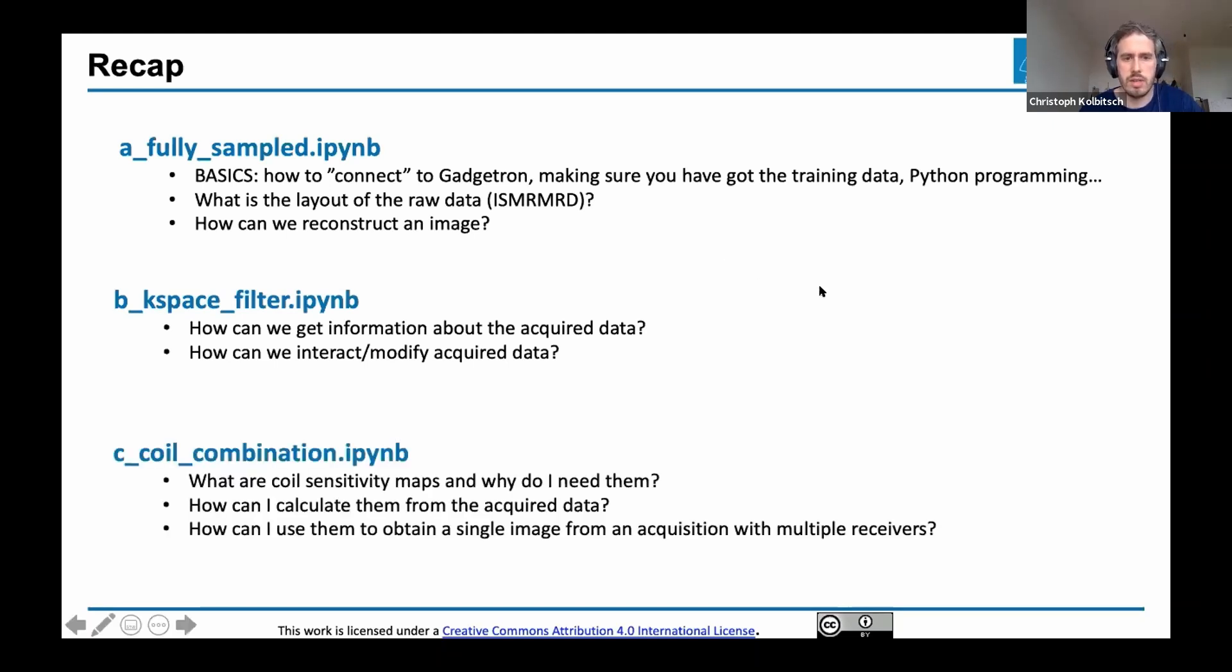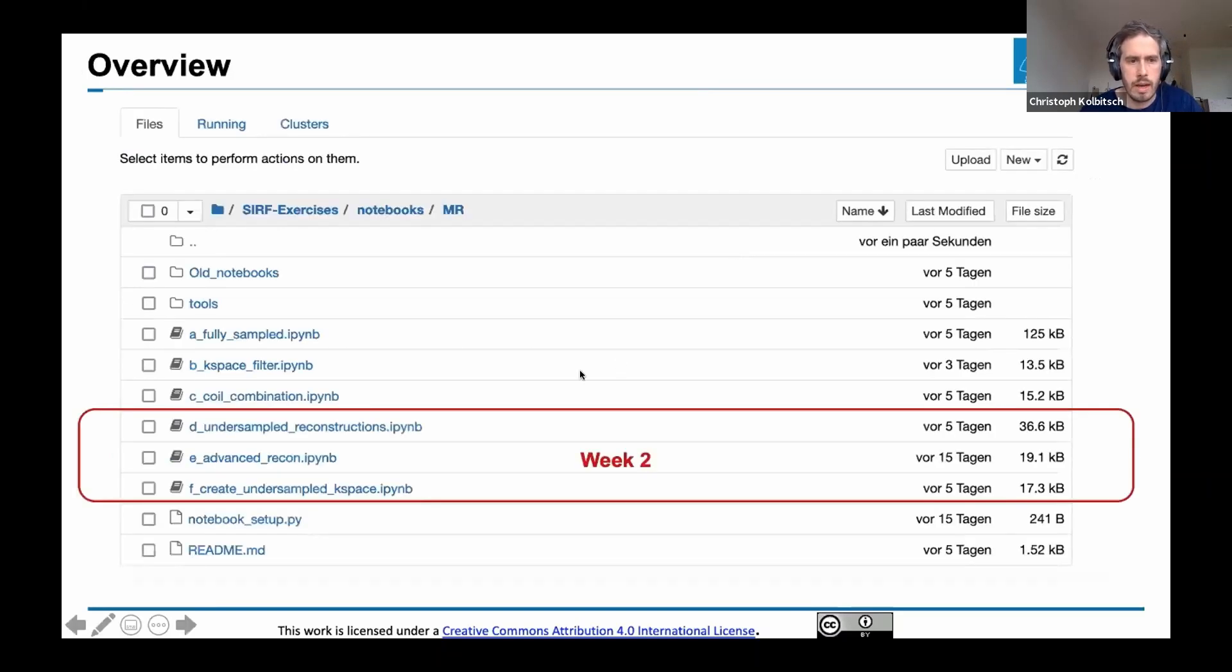The last one, which I'll go into more detail, was the coil combination. This introduced the concept that in MRI we don't just have one raw data set, but multiple raw data sets acquired with different coil elements of a channeled receiver coil. In this notebook, you looked at what the data looks like and how to combine it.